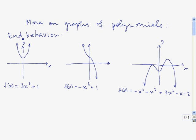When we talk about the end behavior of a function, we're talking about what happens in the positive and negative infinity direction — what happens to the y values as x gets larger and larger and larger, and as x gets smaller and smaller and smaller.